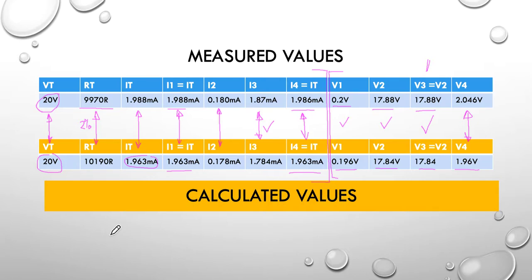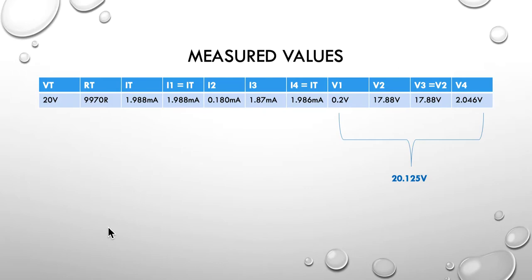The currents do add up. Let's do the addition. Do the voltages add up? If I add all the voltages around the circuit—0.2, 17.88, another 17.88, and 2.06—I get 20.125 volts, which is so close it doesn't matter. Finally, our currents: I2 and I3 add up to 2 milliamps, and the current we measured was 1.98. So our currents add up nicely.